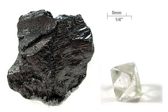Commercially viable natural deposits of graphite occur in many parts of the world, but the most important sources economically are in China, India, Brazil and North Korea. Graphite deposits are of metamorphic origin, found in association with quartz, mica and feldspars in schists, gneisses and metamorphosed sandstones and limestone as lenses or veins, sometimes of a meter or more in thickness.